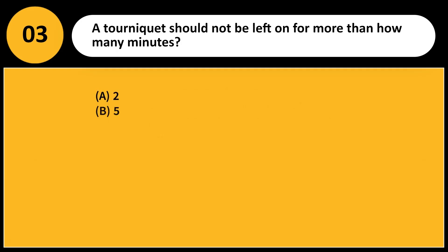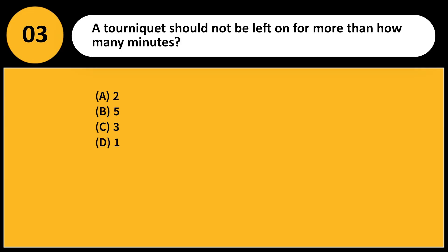A tourniquet should not be left on for more than how many minutes? A. 2. B. 5. C. 3. D. 1. Answer: D. Prolonged tourniquet application beyond 1 minute can cause hemoconcentration and affect test results.